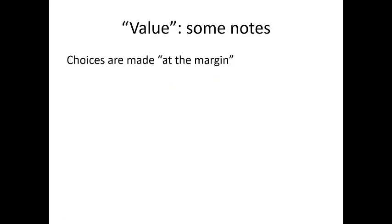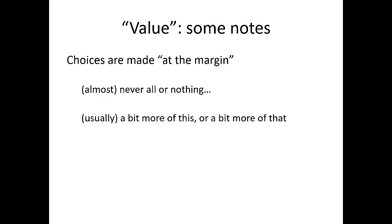Another quick note about value: choices are made at the margin. Choices are almost never all-or-nothing. When I go to the store I'm not choosing beer against no beer — I'm choosing should I buy a six-pack or a 30-pack. I'm deciding whether I want a little bit more of good A, and that oftentimes means a little bit less of good B, because of scarcity, a budget constraint, and the trade-off.